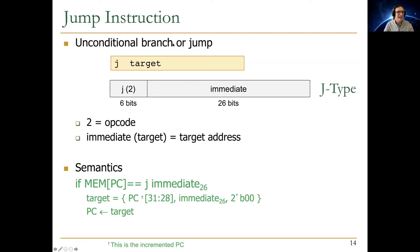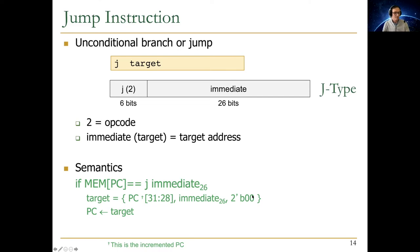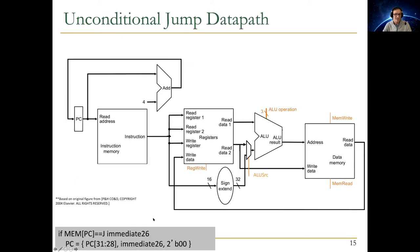For the jump instruction, the target address for the next PC is formed by concatenating the top four bits of the incremented PC, the 26-bit immediate, and two zero bits at the bottom — because it's a byte-addressable machine. The program counter gets this target address unconditionally. We need the data path elements and control logic to execute that instruction.